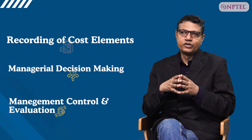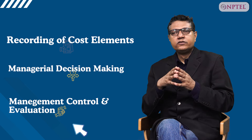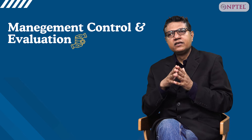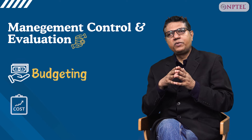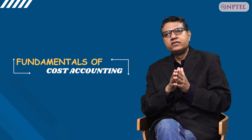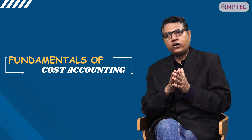After cost records have been maintained and decisions have been taken, it is important to see how these decisions are actually performing after execution. That is the part of management control. We will discuss management control tools primarily in two sections: the first is budgeting and the second part is standard costing. This is a well-designed comprehensive course which covers all three aspects: the recording of cost elements, management decision making using the cost records, and the measurement of performance and evaluation using cost records like budgeting and standard costing.